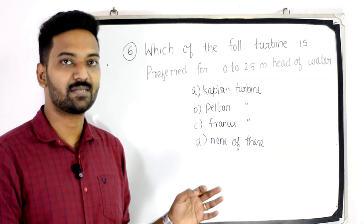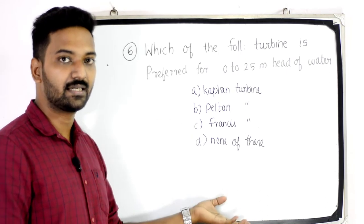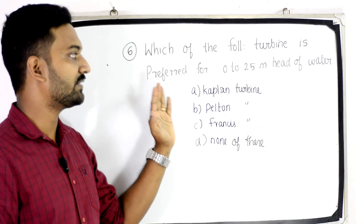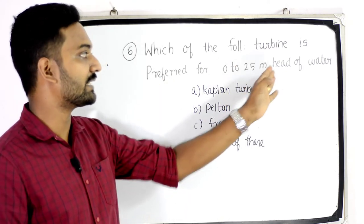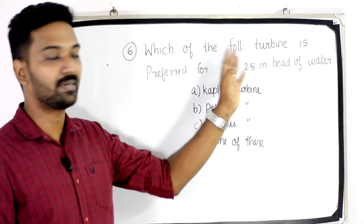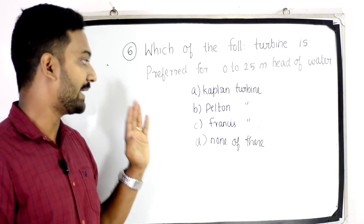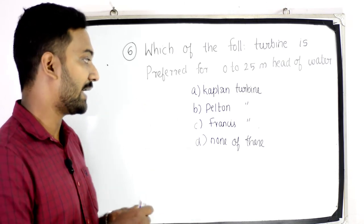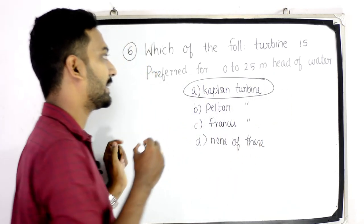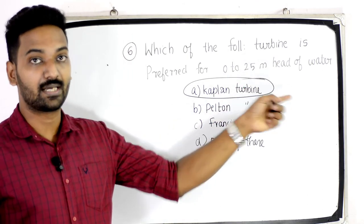The sixth question is important: which of the following turbines is preferred for a 0 to 25 metre head of water? Options: Kaplan turbine, Pelton turbine, Francis turbine, or none of these. The answer is Kaplan turbine — it is preferred for a 0 to 25 metre head of water.